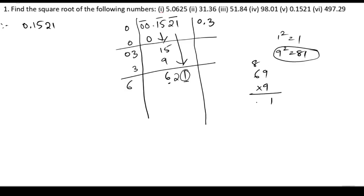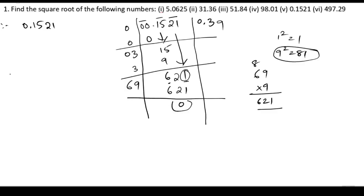So we take 69 into 9: 9 times 6 is 54, plus 8 is 62. So the answer is 621. So 9 into 9 gives 621. The remainder is 0. Therefore, the square root of 0.1521 is 0.39.